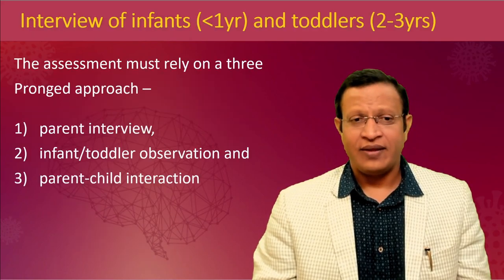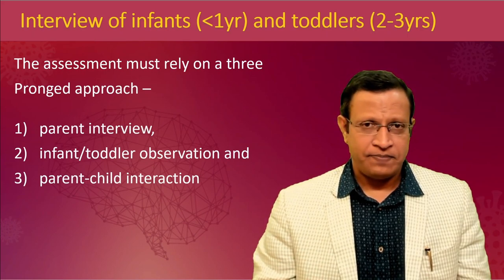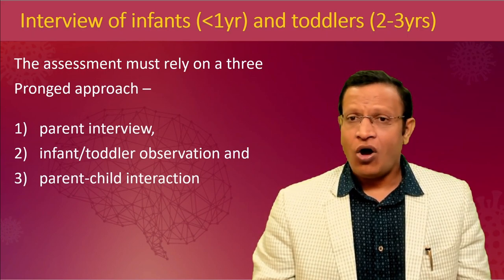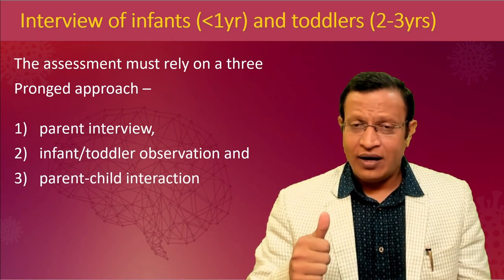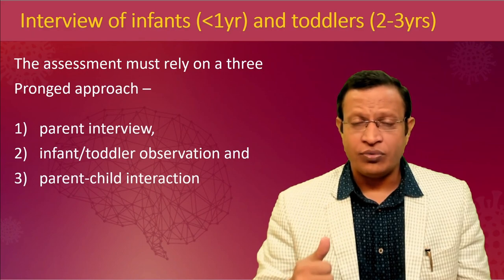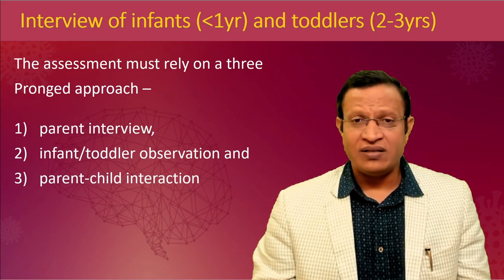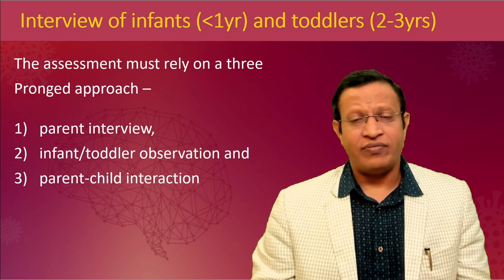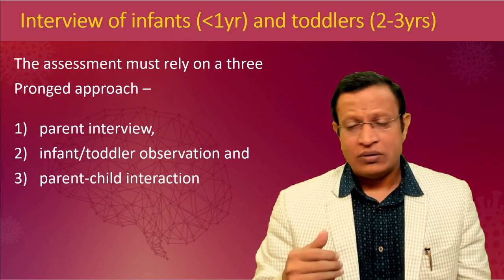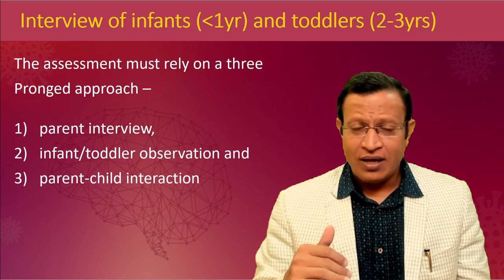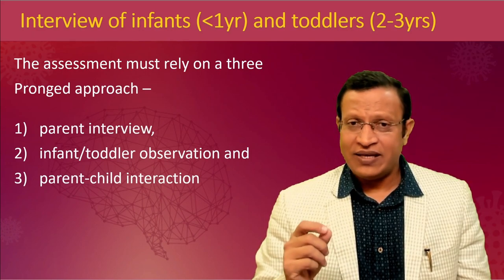The approach to Child and Adolescent Psychiatry depends upon the age of the child and cognitive development. If the child is an infant or toddler, we rely on three important sources of information: interviewing both parents to gather good information, observing how the infant or toddler interacts with the world, and observing parent-child interaction — including the child's attachment and how the parents respond to the child's needs. This three-pronged approach plays a very important role.